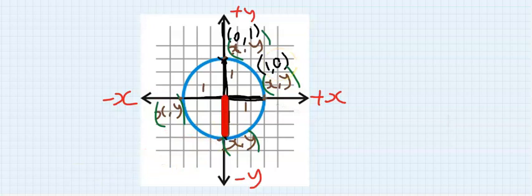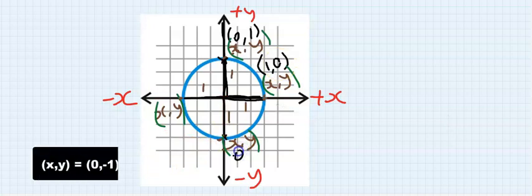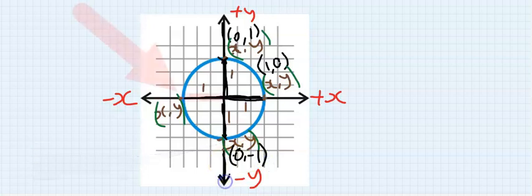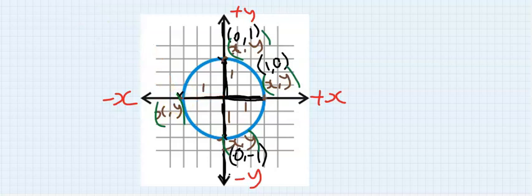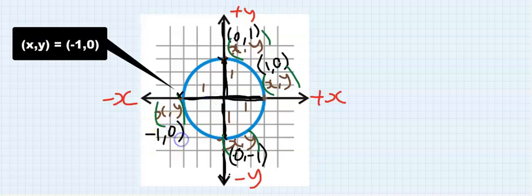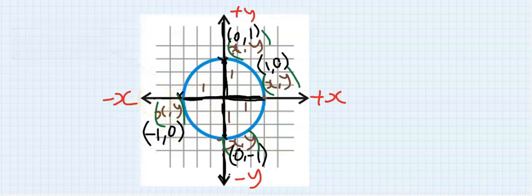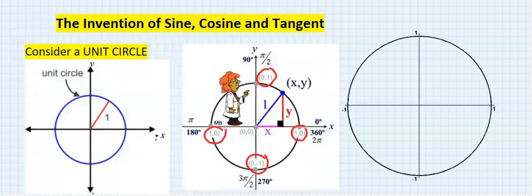Considering the bottom point, the x-axis does not exist and the length of the y-axis is minus one, because it's pointing towards the negative. Considering the leftmost point, the x-axis exists and the length is minus one, and the y-axis does not exist because it's pointing only to the x-axis. That is how each of these coordinates was derived, and the center is (0, 0).